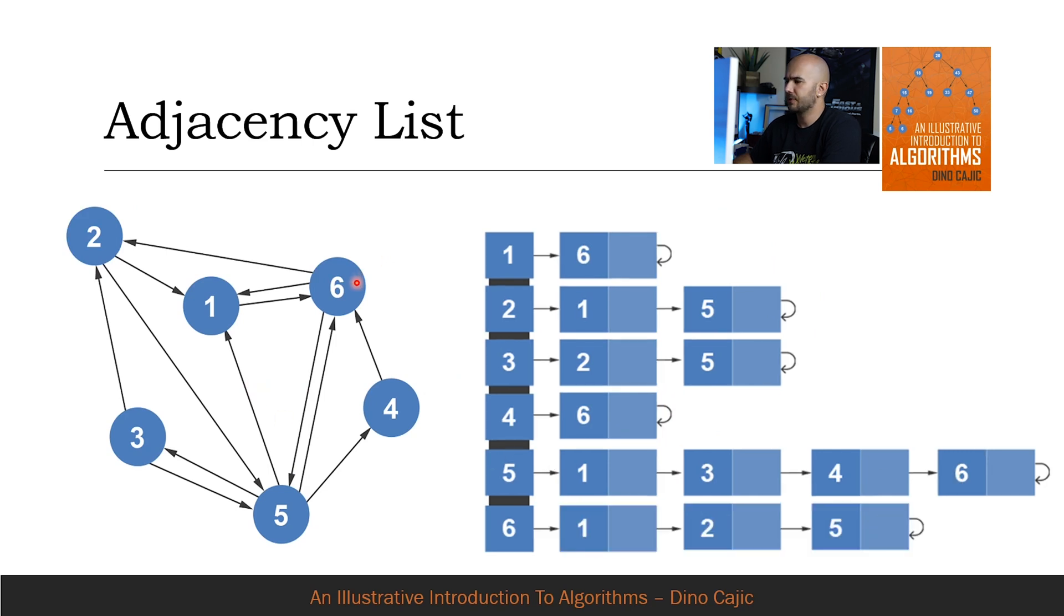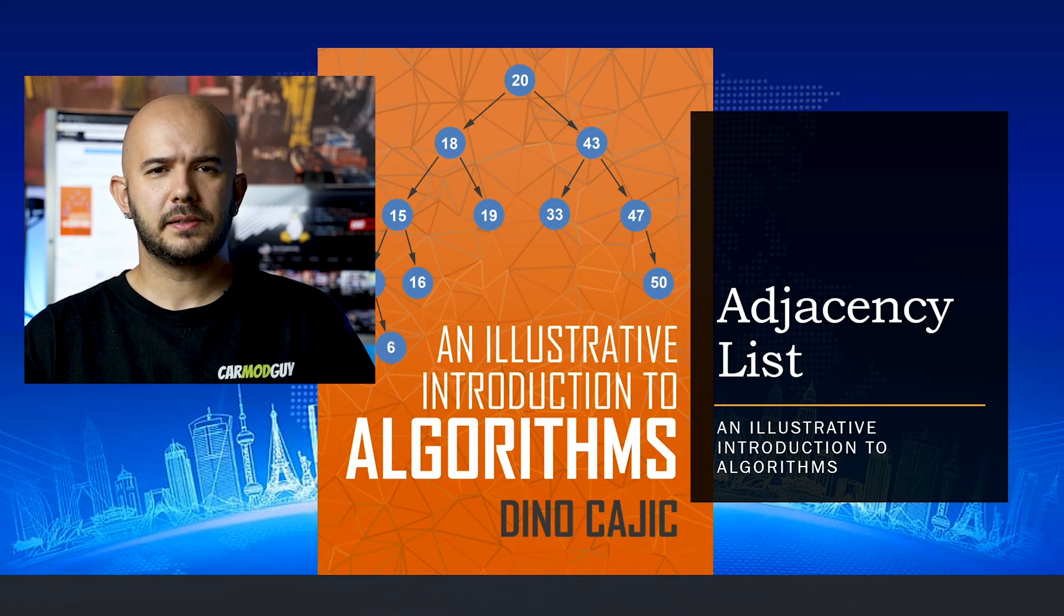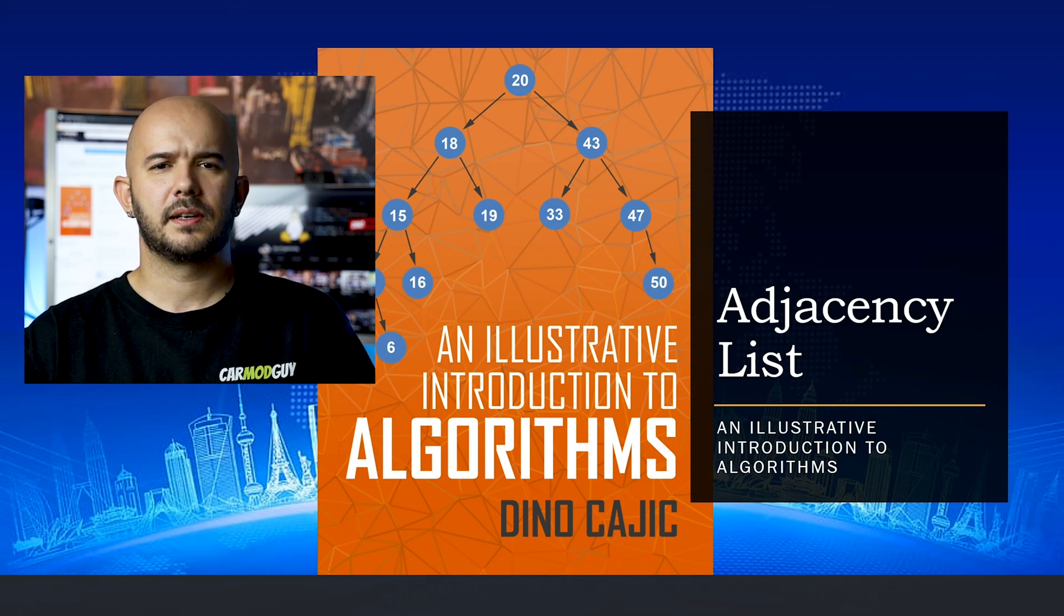Finally, vertex 6 points to vertices 1, 2, and 5. That can be illustrated right here. By observation, we can quickly see that a significant amount of space is saved by switching to an adjacency list from an adjacency matrix. The time complexity stays roughly the same.